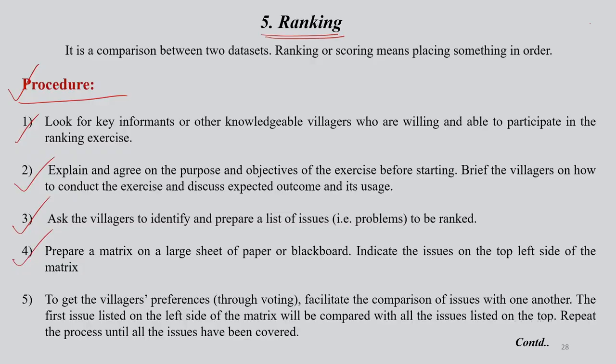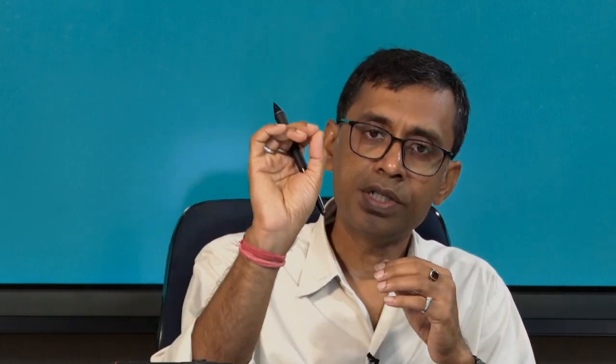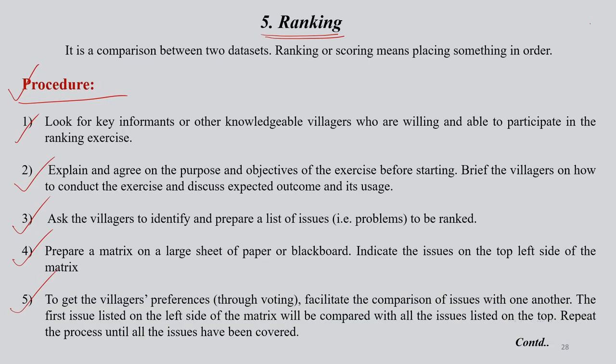Once they do that, prepare a matrix on a large sheet of paper like chart paper. You can put it on the left or right side of the hall, or use a whiteboard or blackboard if available. Otherwise, chart paper is sufficient. Indicate those issues on the top left side of this matrix. To get the community's preferences on certain options or alternatives, the first issue listed on the left side of the matrix will be compared with all the issues listed on the top through the ranking technique.